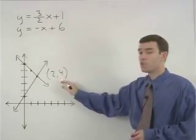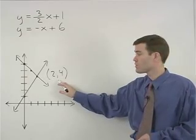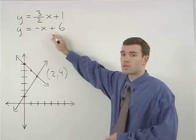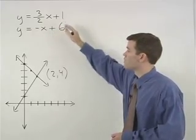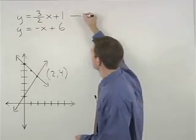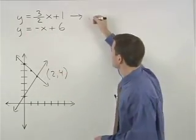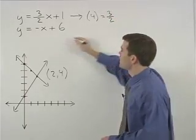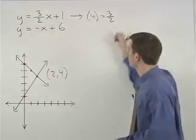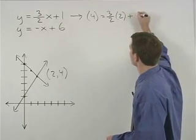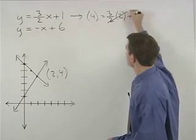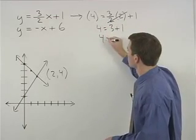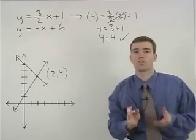It's very easy to check your answer by plugging these values for x and y back into each of the two original equations to see if they work. For our first equation, y is 4 equals 3 halves times x, which is 2, plus 1. The 2's cancel. We have 4 equals 3 plus 1. So 4 equals 4, and our first equation checks.